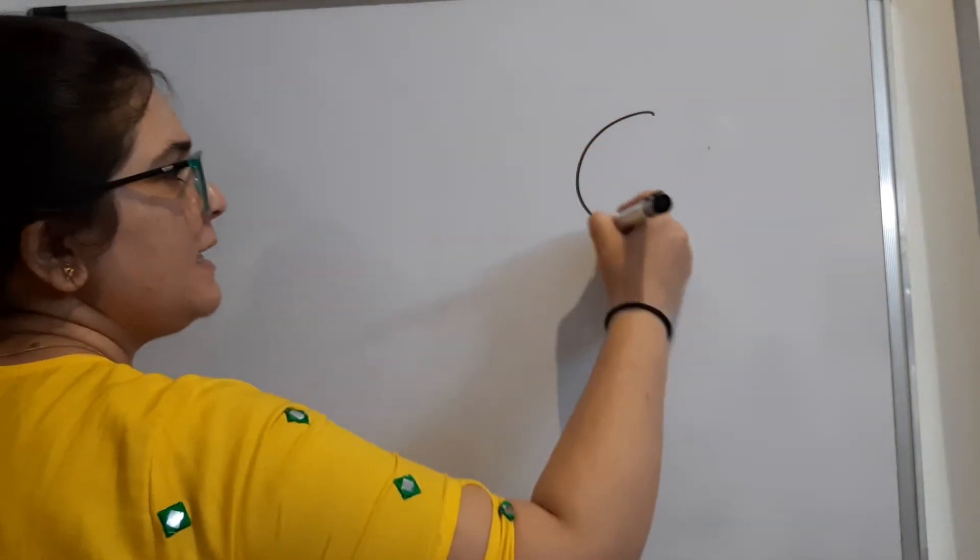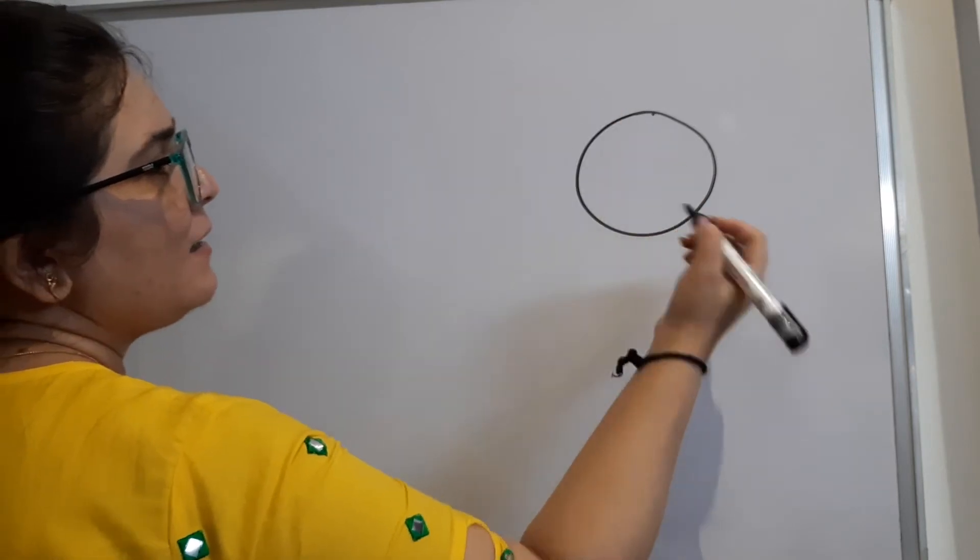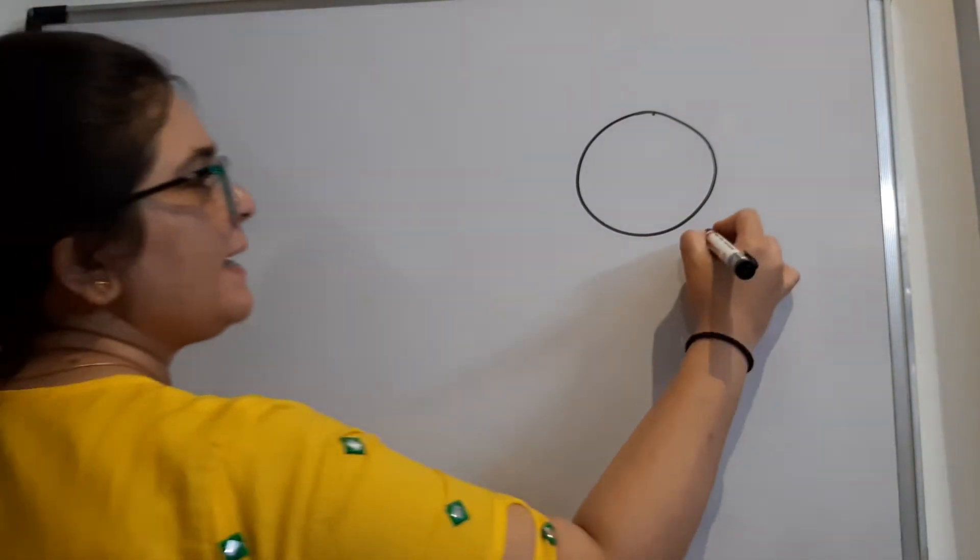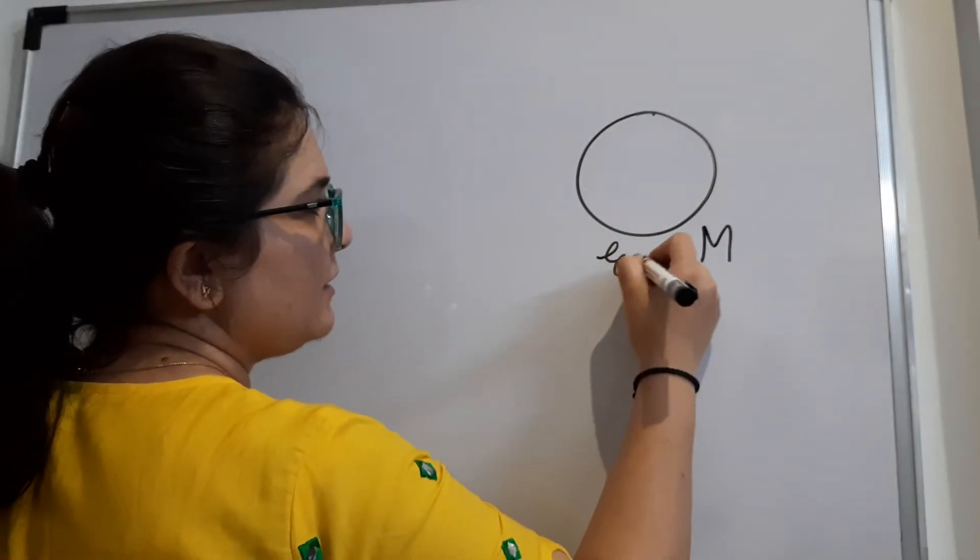Now, let us see how we have got this value of g, and from this value of g we will understand what factors it actually depends on. So, let's say we have Earth, and the mass of the Earth, because it is very huge, we will take it as capital M. So this is the Earth that we have taken.